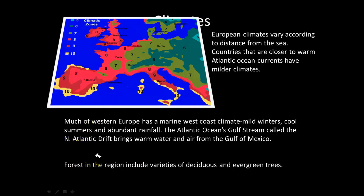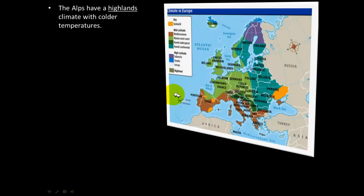Forests in the moderate temperature region include varieties of deciduous and evergreen trees, similar to what we see around here. Looking at the climate map of Europe, the Alps mountains have a highlands climate with colder temperatures. From first semester, the reason for colder temperatures at high elevations is that as you go higher into the atmosphere, there are fewer greenhouse gases — the gases that capture sunlight and warmth from the sun — so it gets colder at higher elevations.